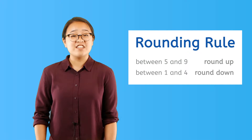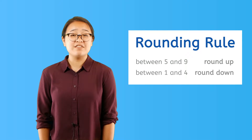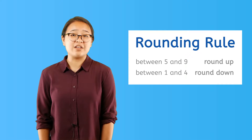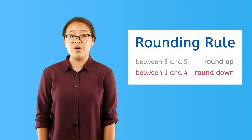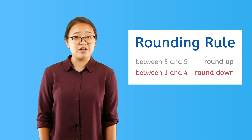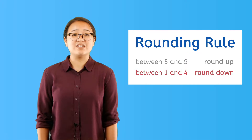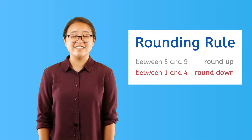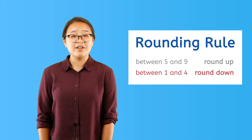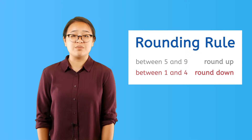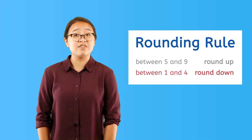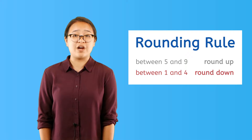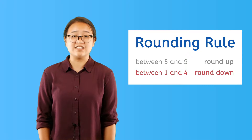If the digit to the right of the given place value is between 1 and 4, you round down. The number in the given place remains the same if the digit to its right is less than 5.